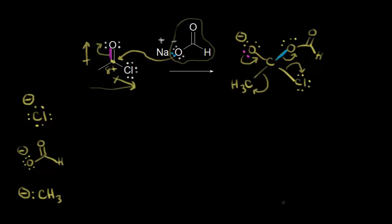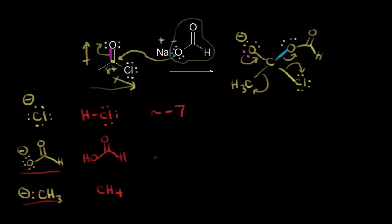To think about which one is the best leaving group, a good approach is to think about the conjugate acid. The conjugate acid of the chloride anion is HCl. The conjugate acid of the formate anion is formic acid. And the conjugate acid of our carbanion is methane, CH4. The pKa of hydrochloric acid is approximately negative seven, the pKa of formic acid is approximately five, and the pKa of methane (or alkanes in general) is around 50.